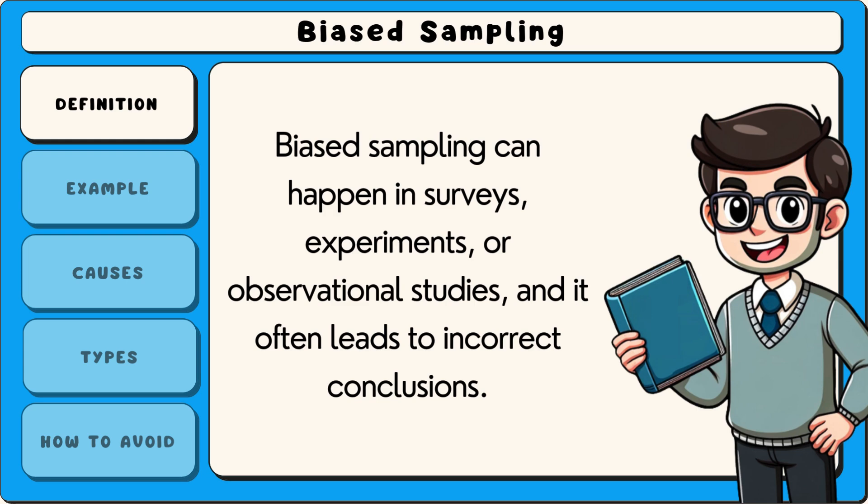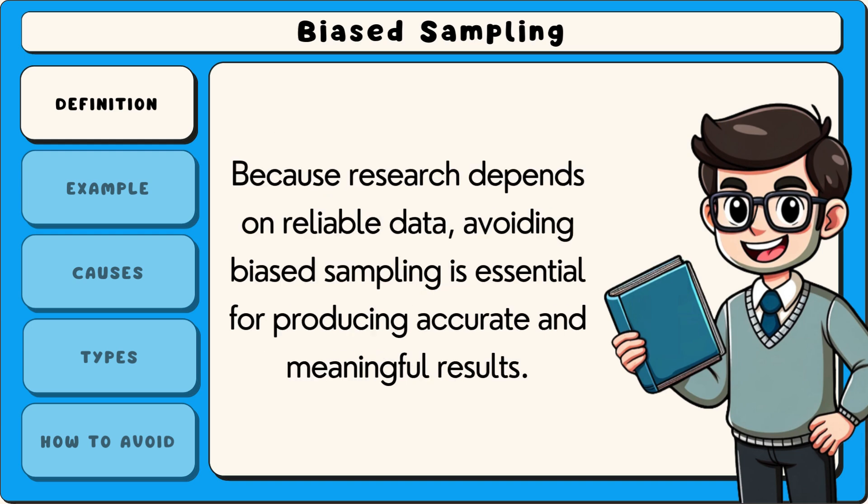Biased sampling can happen in surveys, experiments, or observational studies, and it often leads to incorrect conclusions. Because research depends on reliable data, avoiding biased sampling is essential for producing accurate and meaningful results.